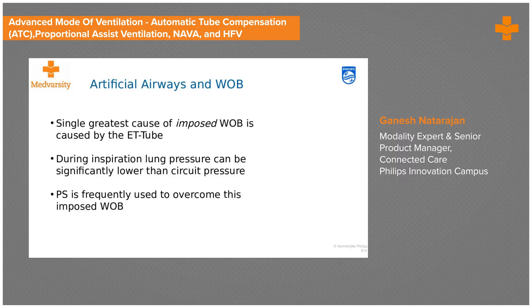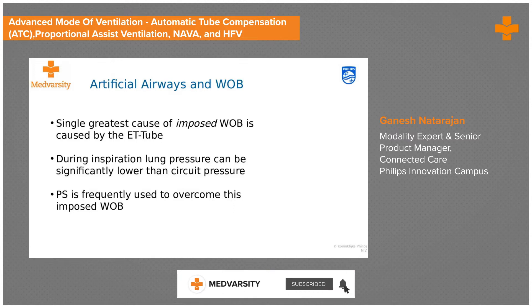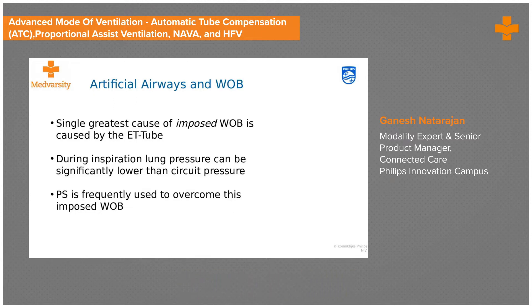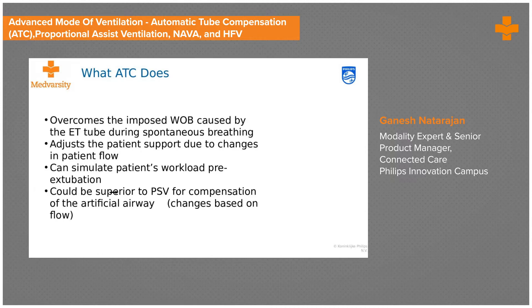The single greatest source of imposed work of breathing is the ET tube. During inspiration, lung pressures are significantly lower. We normally use pressure support to overcome this imposed work of breathing. The thumb rule is that about 4 cm of pressure support is consumed just to overcome the resistance caused by the ET tube. So if you set pressure support at 8, only 4 of it actually benefits the patient. The ATC — Automatic Tube Compensation — overcomes this by adjusting pressure support so that what you set is what the patient actually receives. That is the principle of ATC.